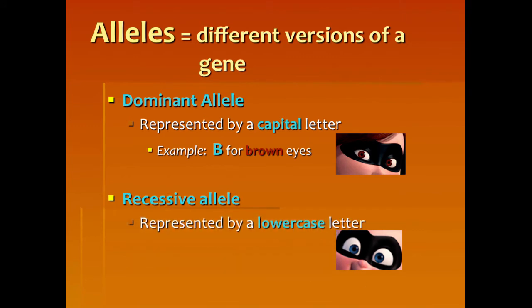The other type of allele is recessive — genes that are only going to show if there is no dominant presence. We use a lowercase letter to represent this. So if blue eyes is recessive, I would use a little b. Looking at the mother's eyes: she has brown eyes, so her genotype is big B, little b. She has brown eyes because she has a dominant gene, but her son has blue eyes. The only way he can have blue eyes is if both his alleles for that gene are recessive, so his genotype would be little b, little b.